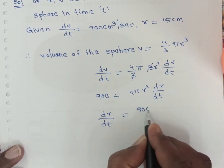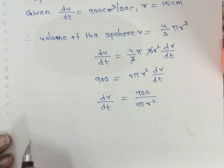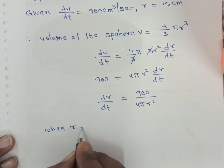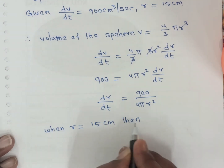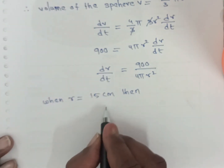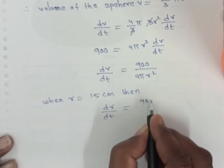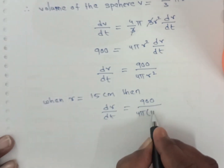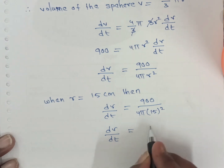This simplifies to DR by DT equals 900 divided by 4 pi R squared. When R is equal to 15 centimeters, substituting R equals 15, DR by DT is equal to 900 divided by 4 pi into 15 squared.